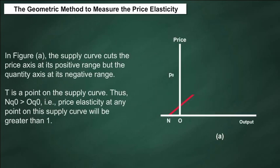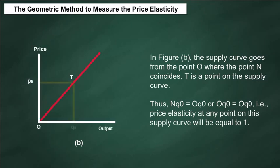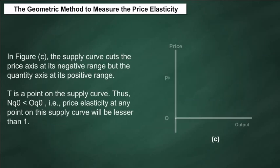In Figure A, the supply curve cuts the price axis at its positive range and the quantity axis at its negative range. At point T on the supply curve, NQ0 is greater than OQ0, meaning price elasticity at any point on this supply curve will be greater than 1. In Figure B, the supply curve passes through origin O where point N coincides with T; NQ0 equals OQ0, so price elasticity equals 1. In Figure C, the supply curve cuts the price axis at its negative range; NQ0 is less than OQ0, so price elasticity is less than 1.